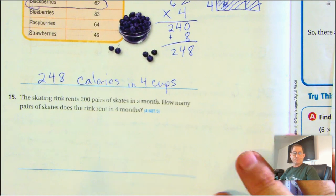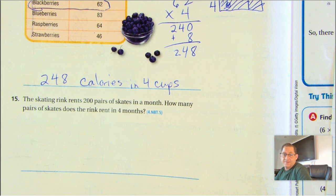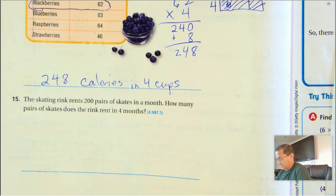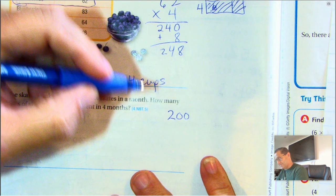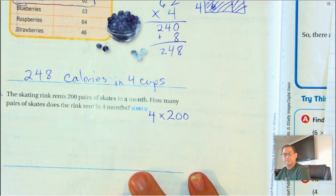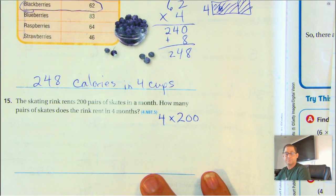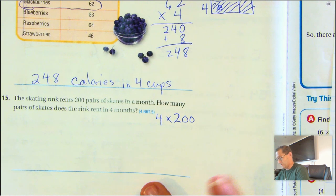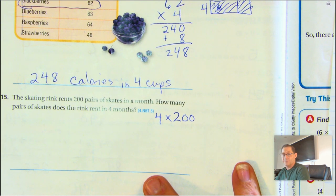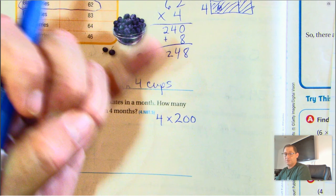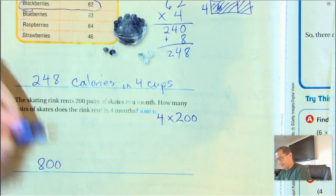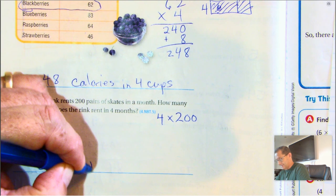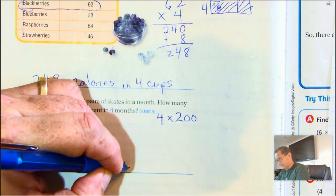And last. The skating rink rents 200 pairs of skates in a month. How many pairs of skates does the rink rent in 4 months? Well, they seem to have kind of an easy one for us for the end here. So we have 200 skates per month, and we're renting for 4 months. Okay. 4 times 200. I'm not sure I need to break this up, do I? 200, 400, 600, 800. 800 skates rented in 4 months.